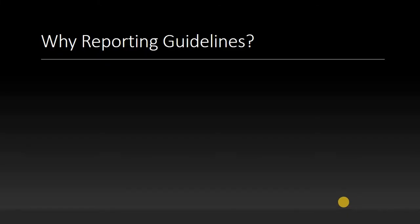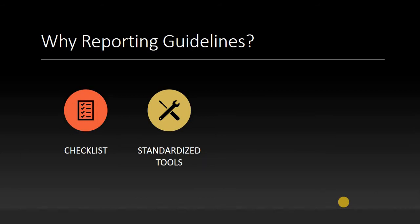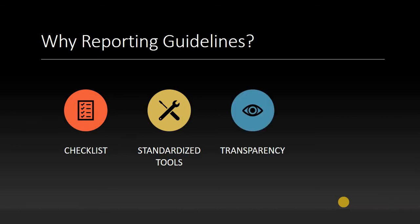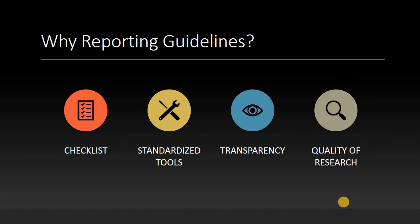Why are reporting guidelines very important in research? These reporting guidelines give us a checklist-based approach for assessing the quality of any journal article or research paper. Each item in that checklist is a standardized item and they give an objective assessment of various aspects of a research article, thereby eliminating the subjective bias in assessing the quality of a research article. These reporting guidelines increase the transparency of research, and the overall purpose is to increase the quality of research.